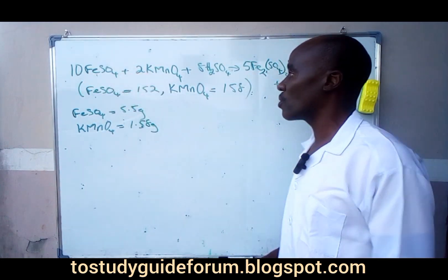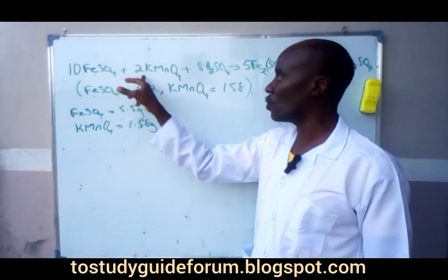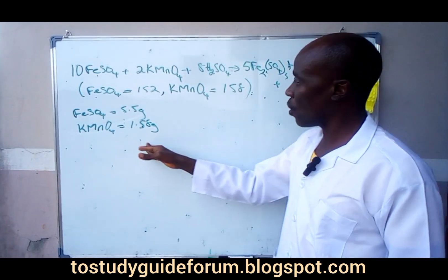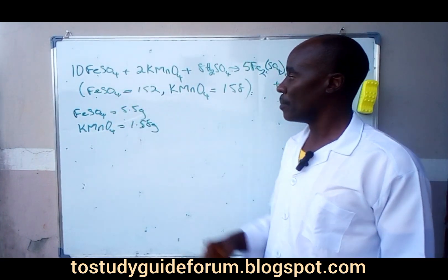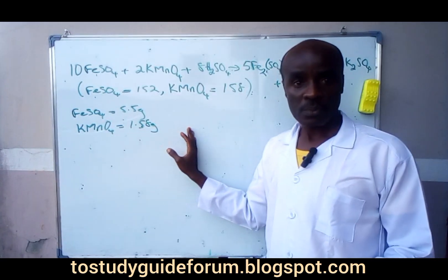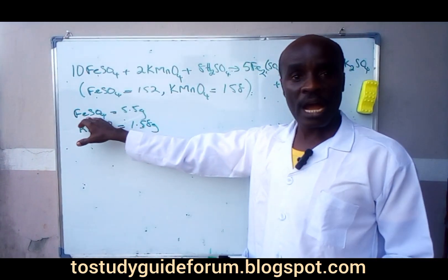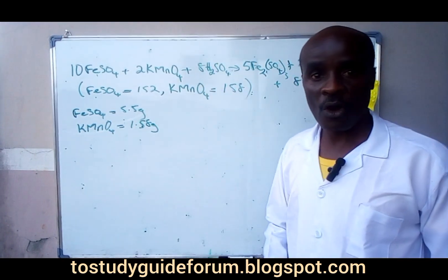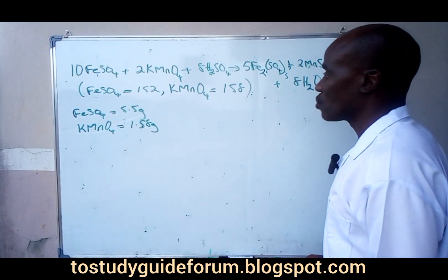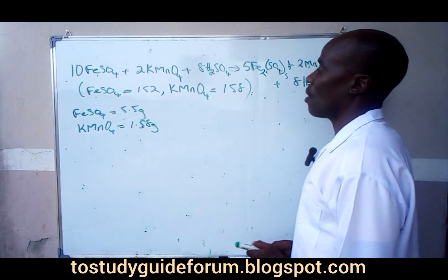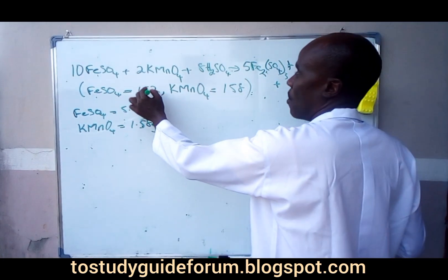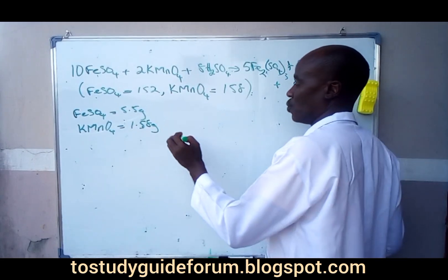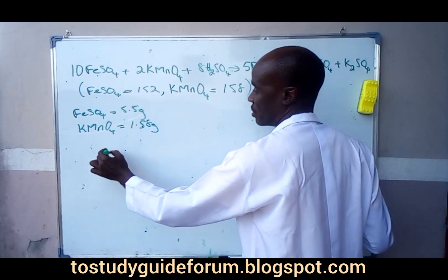The ratio is 5 is to 1 — when you break it down, you have 5 to 1. Now, the first thing you do is find the amount — the number of moles of iron(II) tetraoxosulphate. We know that the molar mass, or relative molecular mass, of it is 152.